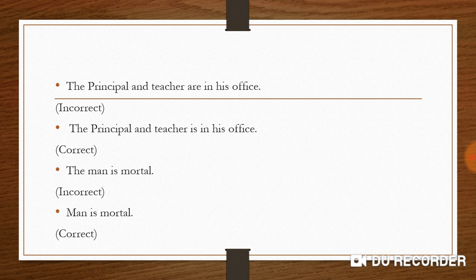Next: 'The principal and the teacher are in his office.' This is wrong. When only one 'the' article is used — 'the principal and teacher' — it refers to the same person holding both roles. So we use 'is': 'The principal and the teacher is in his office.' However, if two separate 'the' articles are used — 'the principal and the teacher' — then they are two different people and 'are' is correct.